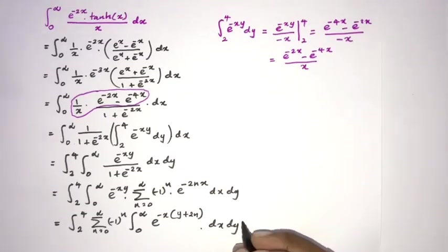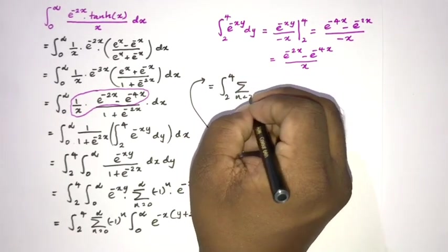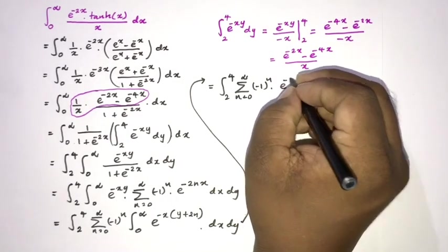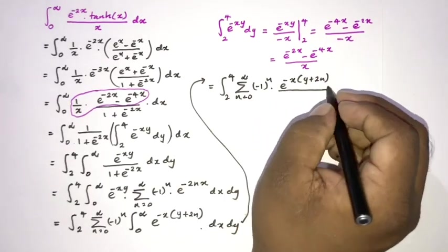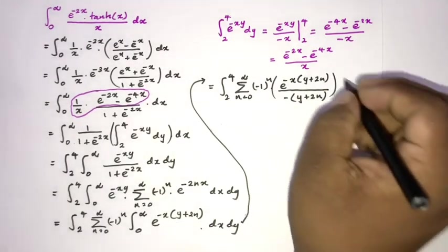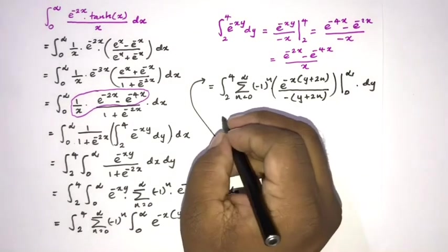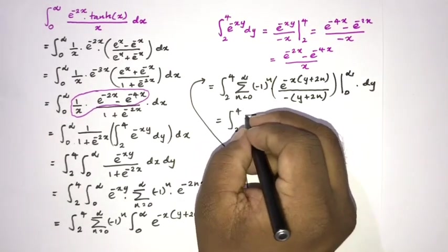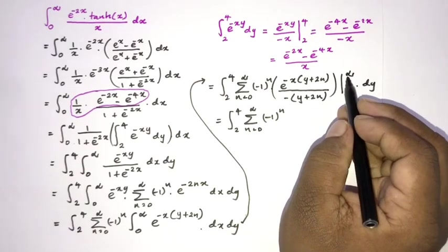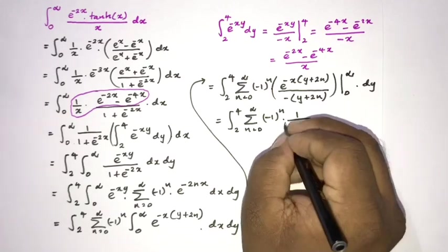Now we can integrate. Our expression equals the integral from 2 to 4 of the sum from 0 to infinity of (minus 1) to the n. Integrating over x gives e to the minus x(y plus 2n) divided by minus (y plus 2n), evaluated from 0 to infinity. Applying the limit at infinity, this becomes plus 1 over (y plus 2n), dy.